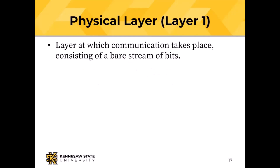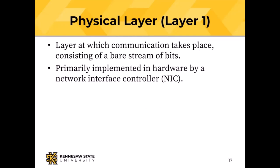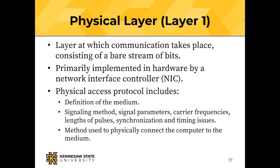At the physical layer, we send a stream of bits from one place to another — primarily hardware, the network interface controller. The physical protocol includes the medium (cellular radio, Wi-Fi, Ethernet cable), the signaling method — how bits are converted into variations of that physical medium — and synchronization, timing, and physical connections. Standardization is why you can buy a Belkin Ethernet cable and plug it into an Apple computer.